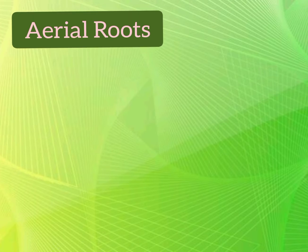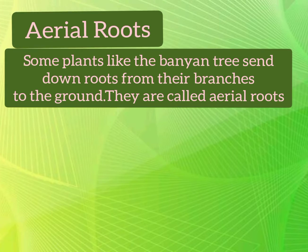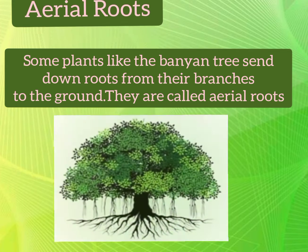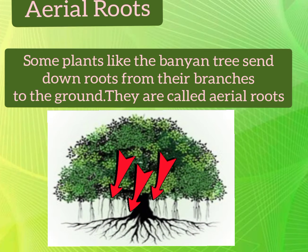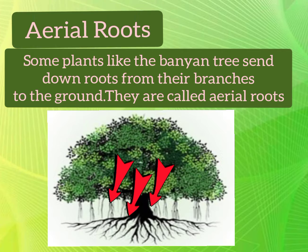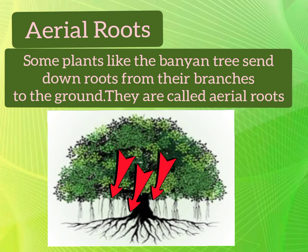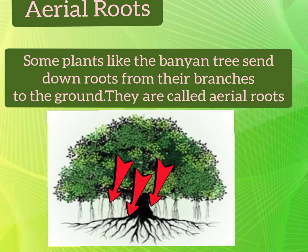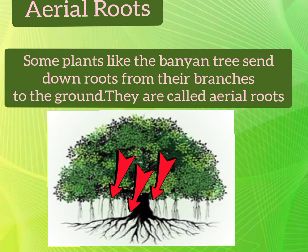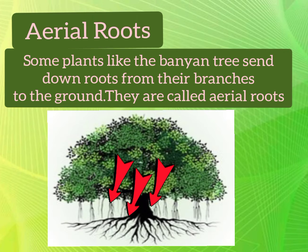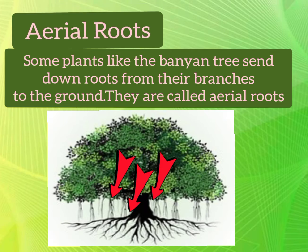Next is aerial roots. Some plants like the banyan tree send down roots from their branches to the ground — these are called aerial roots. These roots support the heavy branches of the trees and help in breathing and taking in moisture from the air.